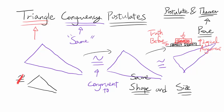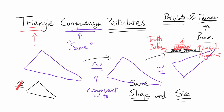A postulate, on the other hand, you cannot prove — you are not going to prove it. But you are going to accept it as true because it makes so much common sense. It is just so logical that if you look at it, it just cannot be false. So with a postulate, you say: well, this makes so much sense, I can just look at it, it makes common sense, and it has to be true.